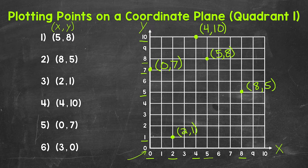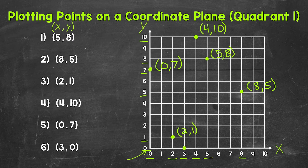Lastly, let's move on to number 6, where we have 3, 0. The x-coordinate is 3, so let's go over 3. And then the y-coordinate is 0, so we don't move vertically at all. Over 3, up 0 — we plot this point right here, so this is 3, 0. Whenever we have a y-coordinate of 0, that point is going to be on the x-axis — something to keep in mind as well.